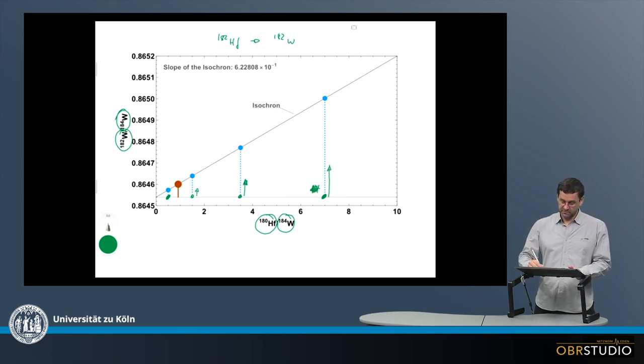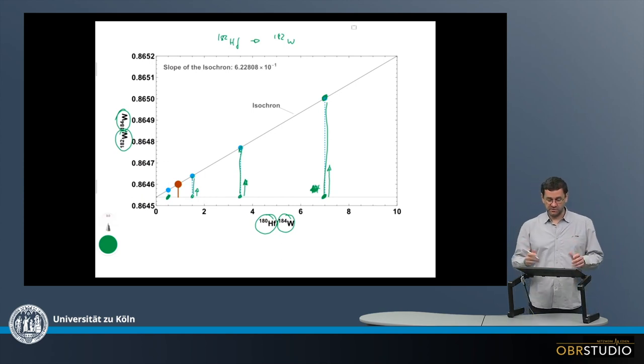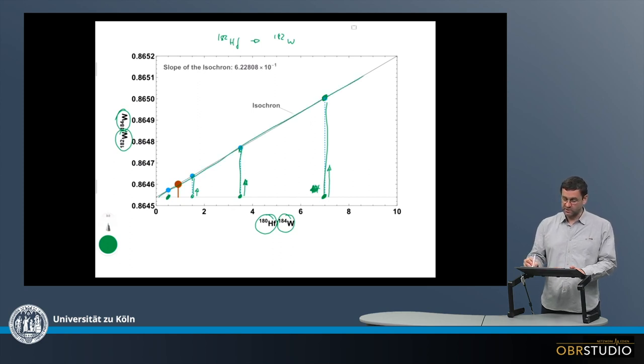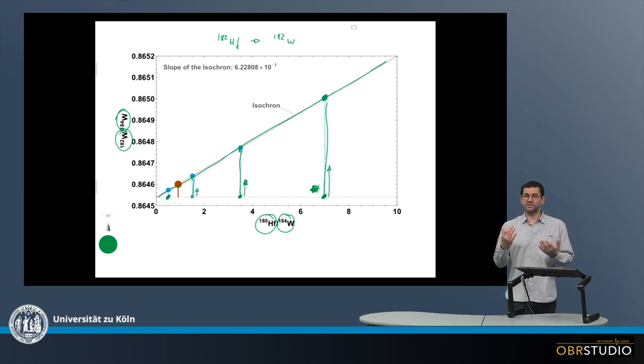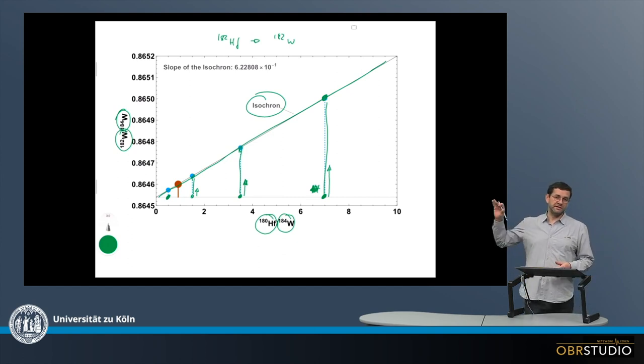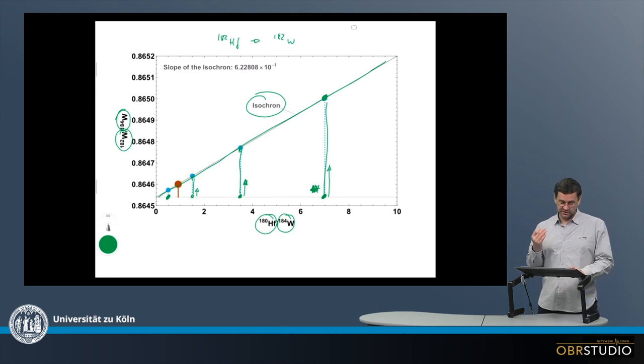So after a certain time, the first component moves up to this first blue point here, the second component moves up to this other blue point here, and so on. So in the same amount of time, of course, components with smaller initial amounts of Hafnium will move up to a lesser extent than components with a lot of Hafnium that's initially there. So after a time, these points all plot on one line, and this line represents the composition after the same time, and therefore it's an isochron. So it's the line that represents the composition after exactly the same time.